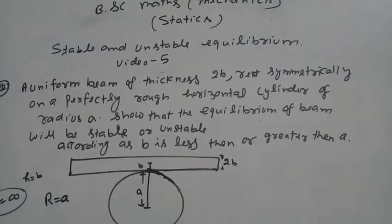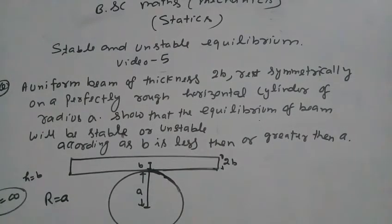In this math mechanics, statistics video on stable and unstable equilibrium, video number 5: Question - A uniform beam of thickness 2b rests symmetrically on a perfectly rough horizontal cylinder of radius a.